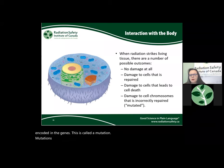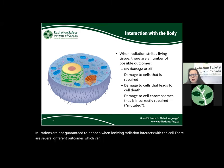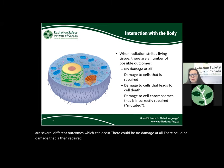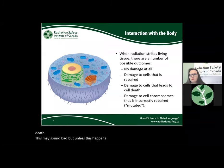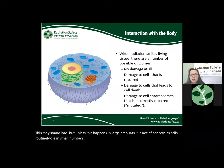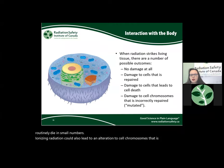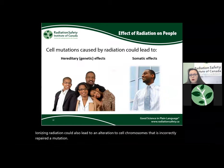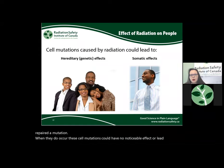Mutations are not guaranteed to happen. When ionizing radiation interacts with a cell, several outcomes are possible: there could be no damage at all; damage that is then repaired; or damage which leads to cell death — which is not of concern unless it happens in large amounts, as cells routinely die in small numbers. Ionizing radiation could also lead to an alteration to cell chromosomes that is incorrectly repaired — a mutation — which could have no noticeable effect or lead to hereditary or somatic effects.